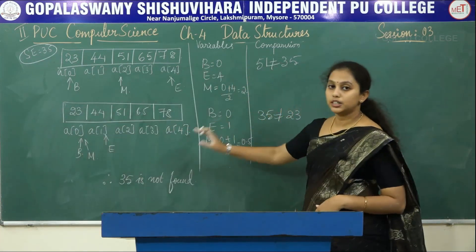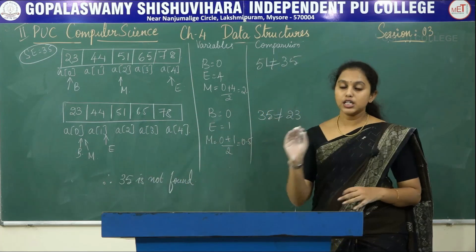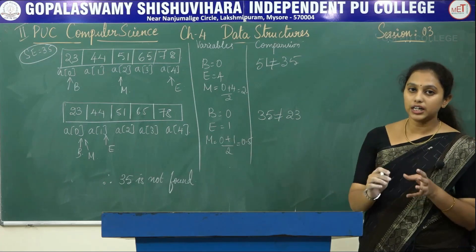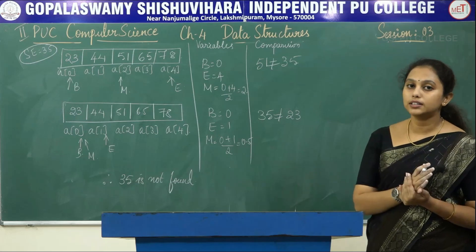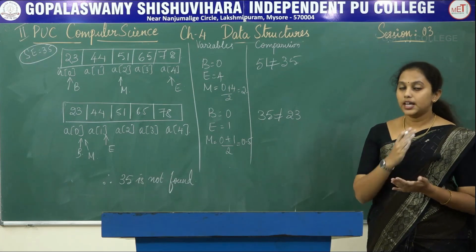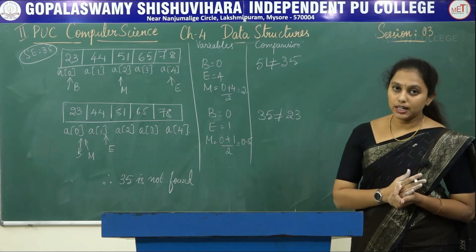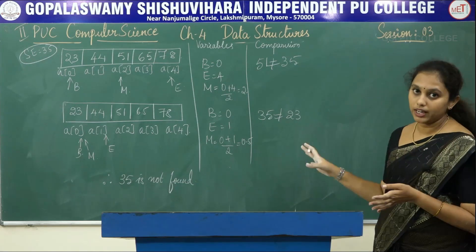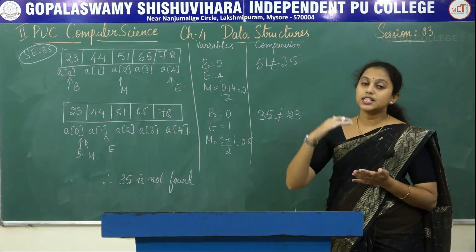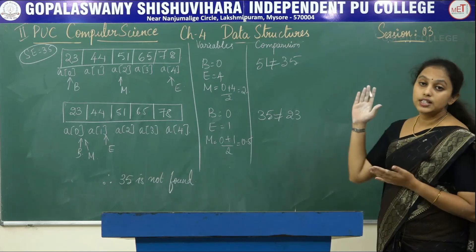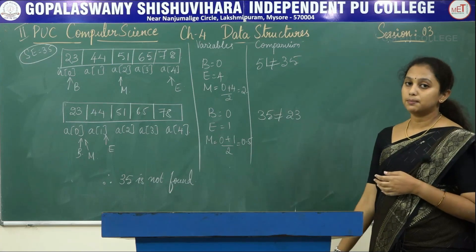I hope you understood how to search the location of an element using binary search. First, check that the array elements are in sorted ascending order. Then mark beginning and end, find the middle element, and compare the search element with it. If found, print the location. Otherwise check if the search element is greater or less than the middle element, and search right or left accordingly. Thank you.